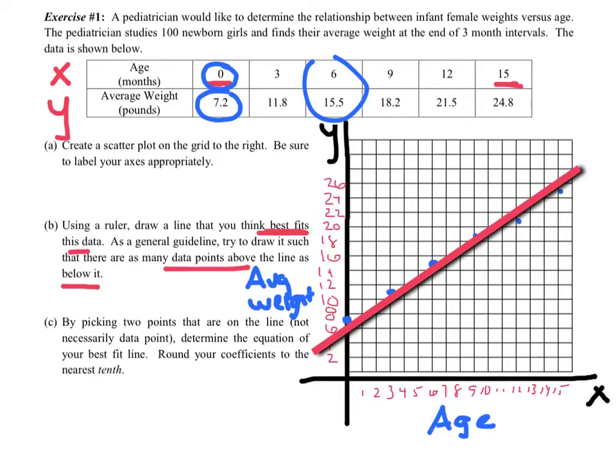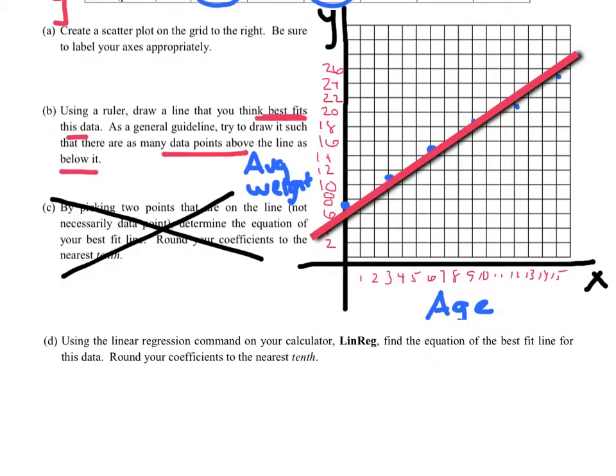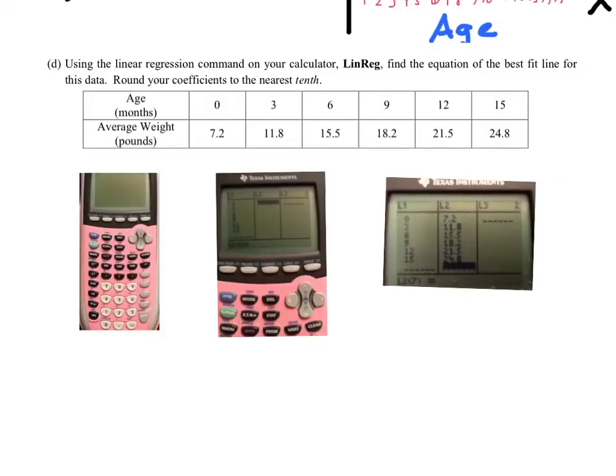Now, part C, I'm actually going to skip, and I want to jump to a different part, so let's not worry about that at the moment. Part D. Using the linear regression command on your calculator, linreg, find the equation of the best fit line for this data, and round your coefficients to the nearest tenth. All right. Now, do not waste your time here. You need to go get your graphing calculator and play with these buttons with me. I'm going to spend a lot of time showing you how to type this in. So we're all prepared tomorrow. No excuses. This is an absolute must.